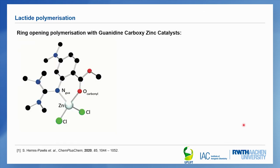On this slide I show the molecular structure of one of our most promising guanidine-carboxy zinc catalysts. Here is the zinc ion, here is the guanidine group — this Y-shaped group — here is the aromatic ring, and here is the ester group. As a guanidine-carboxy complex it is active in the lactide polymerization, but not yet as active as the reported tin compound.